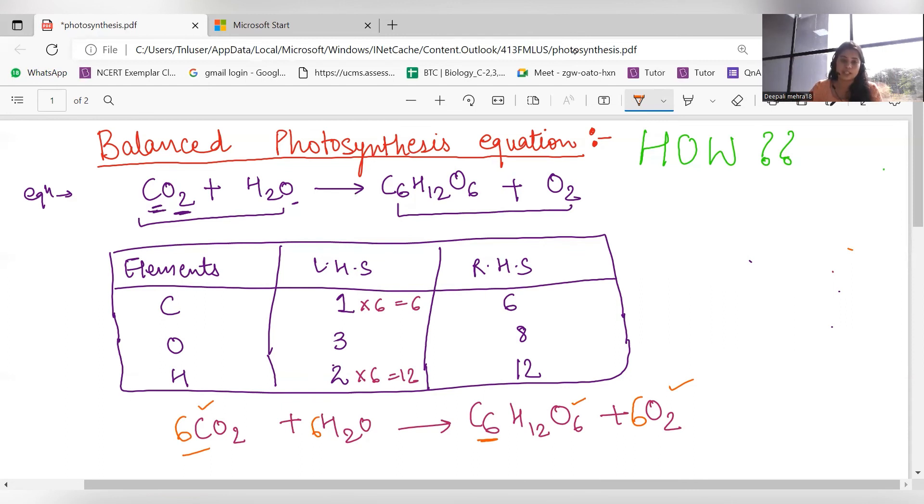Here we have all the elements equal. 6CO2 means 6 carbon and oxygen 12. Here we have oxygen 12 and oxygen. The final balanced equation is 6CO2 + 6H2O → C6H12O6 + 6O2.